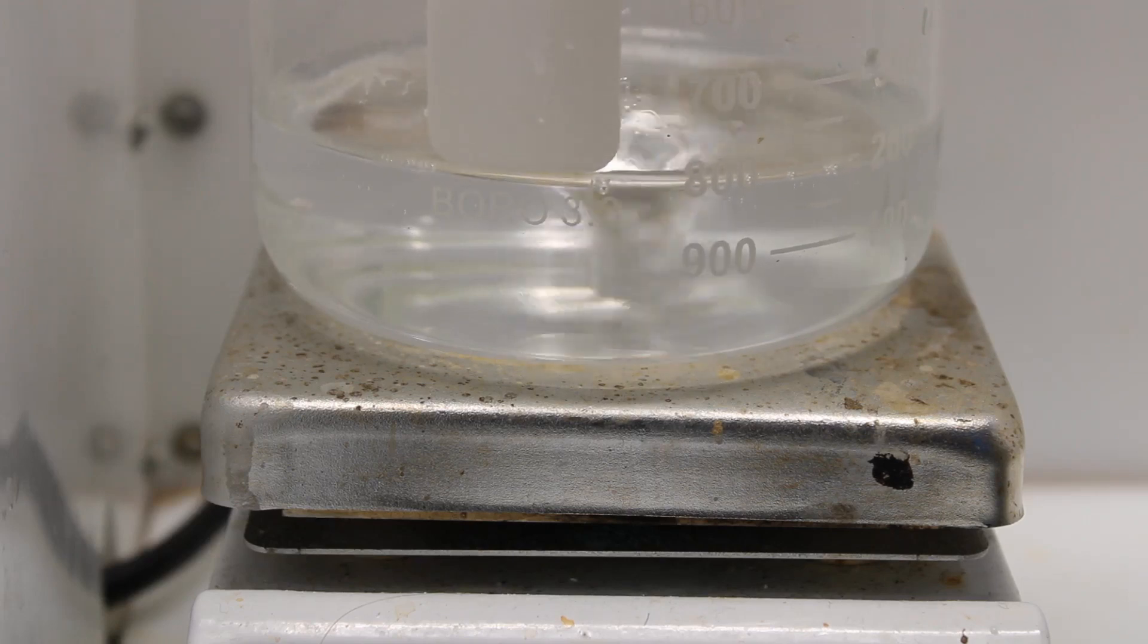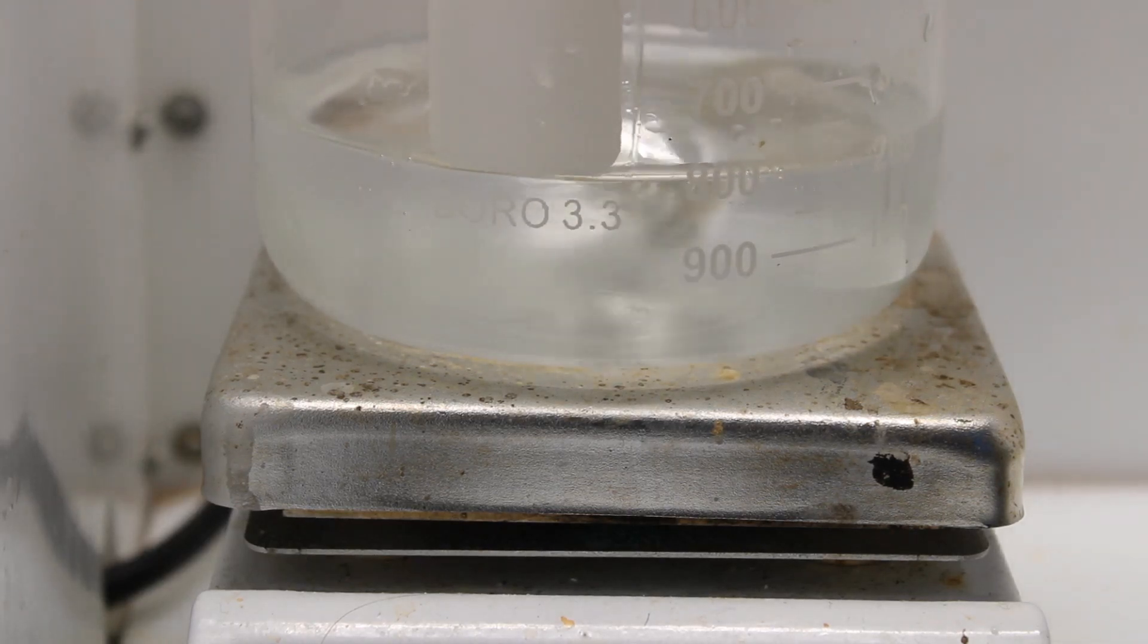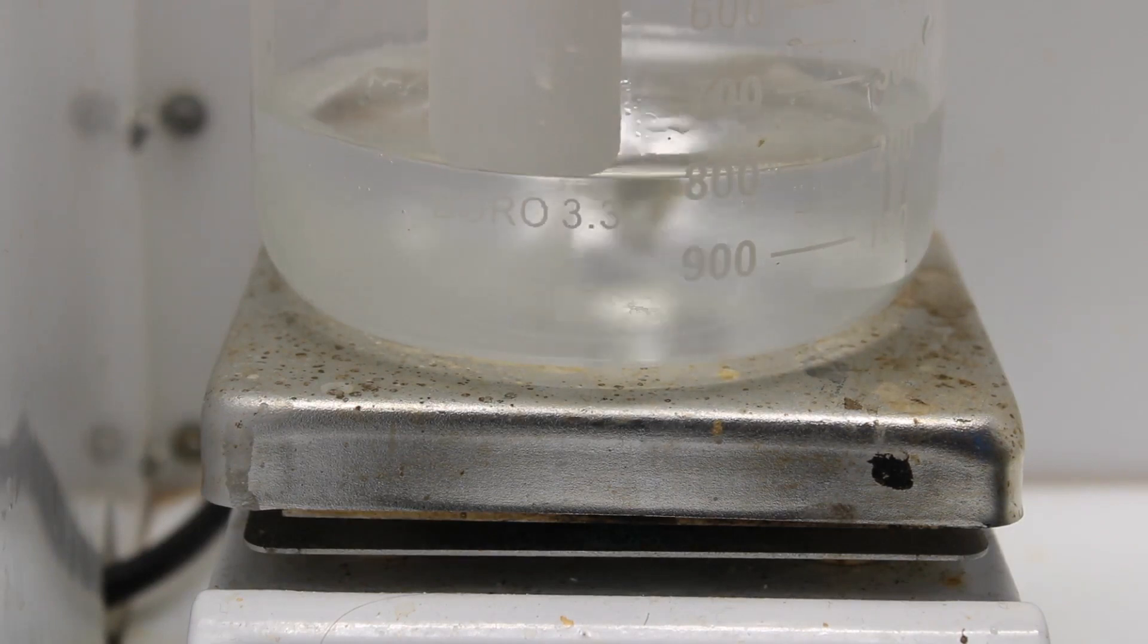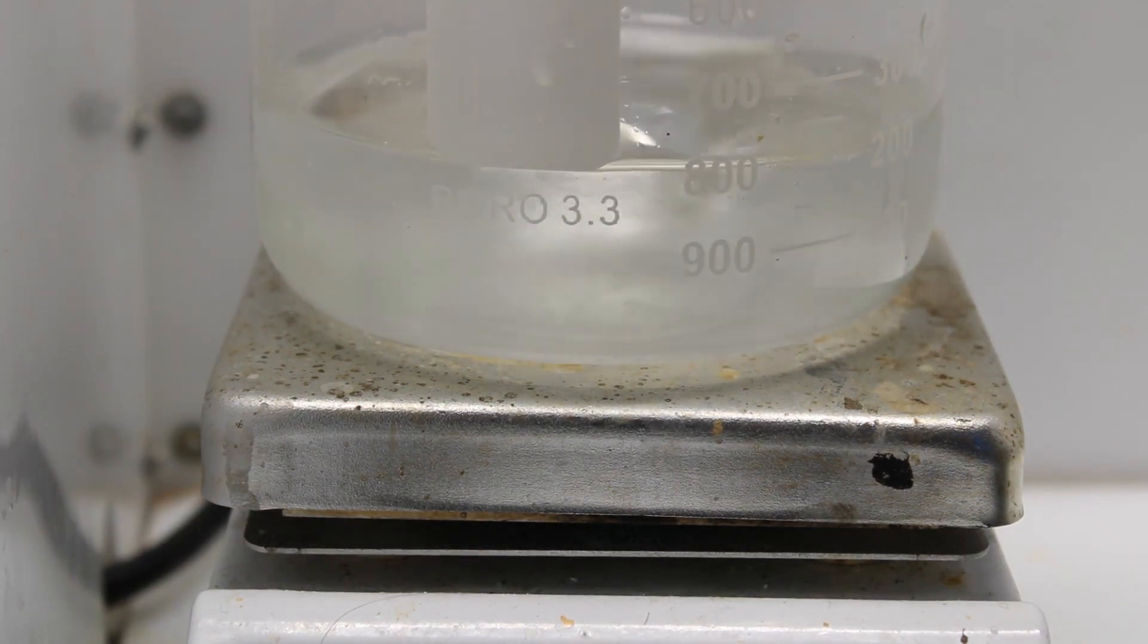First, 30 ml of sulfuric acid is diluted cautiously with 200 ml of distilled or deionized water. This represents a 1.1 times molar excess.